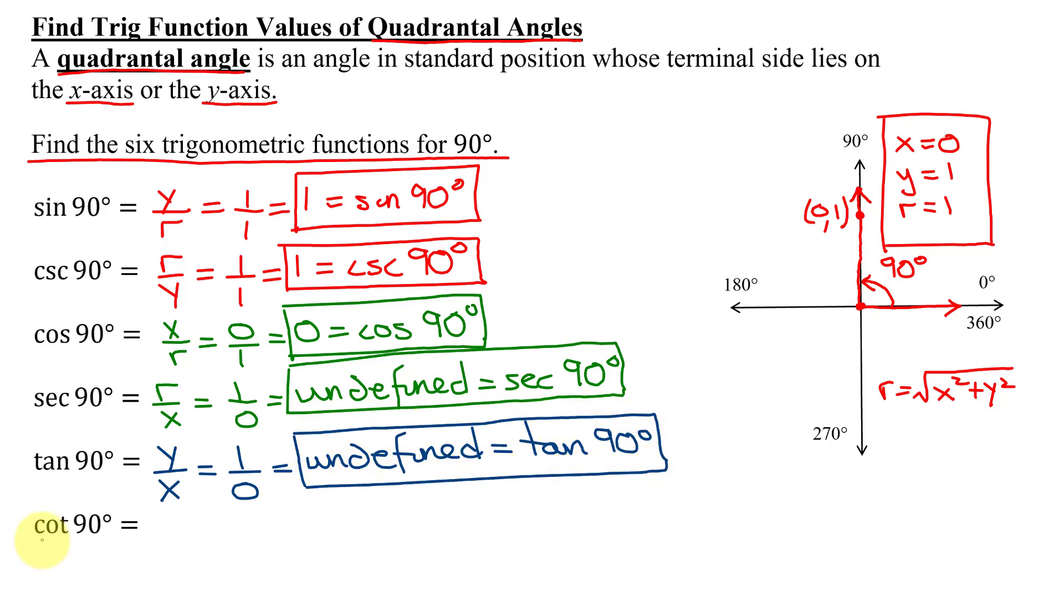And lastly, the cotangent of 90 degrees is going to be x over y, which is 0 over 1, which is 0. So the cotangent of 90 degrees is 0.